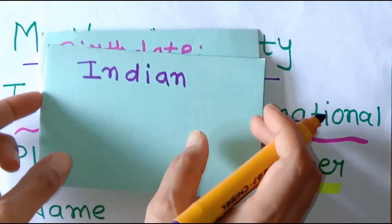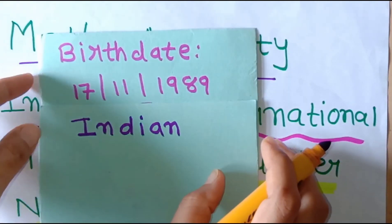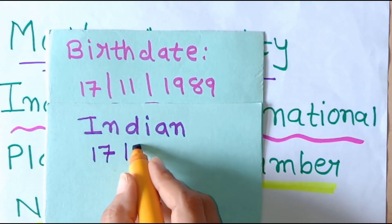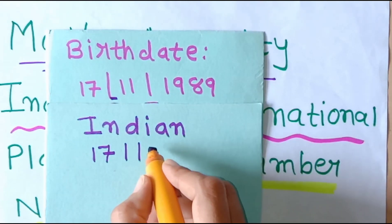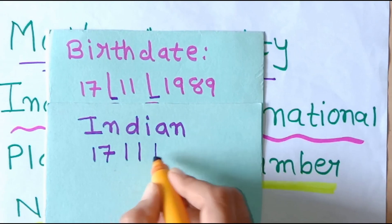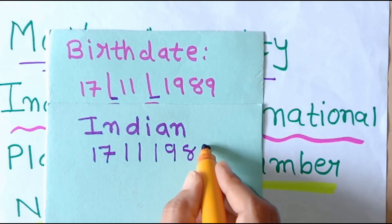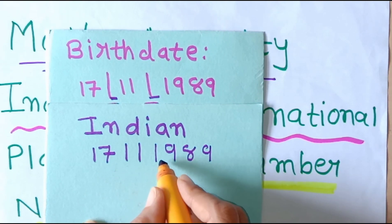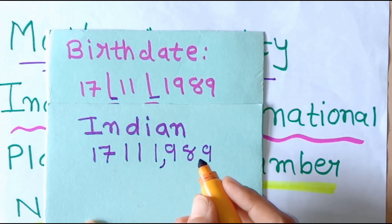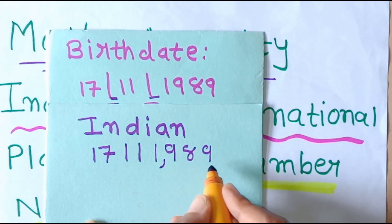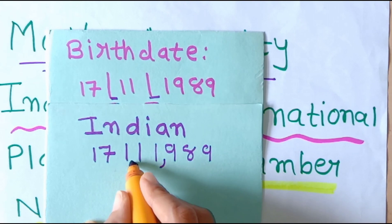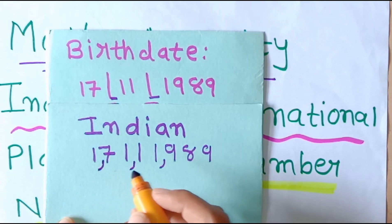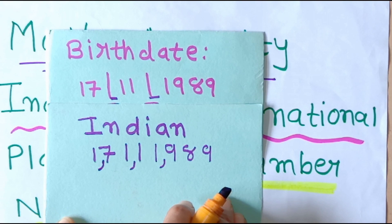So here I am writing: 17, then I remove the sign and write 11, then I remove the sign and write 1989. Now as per the Indian place value chart, you have to insert a comma after the last three digits, then after two digits, then again after two more digits.